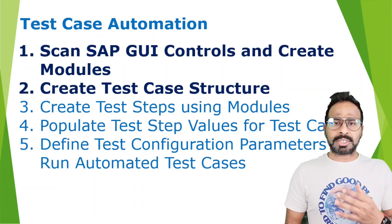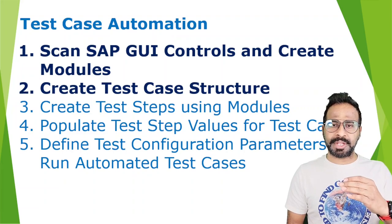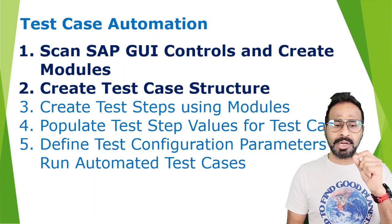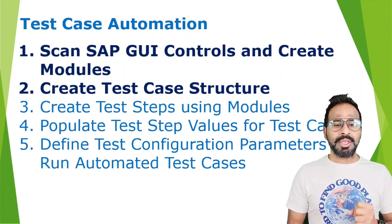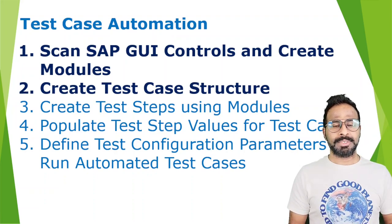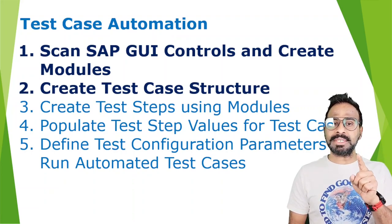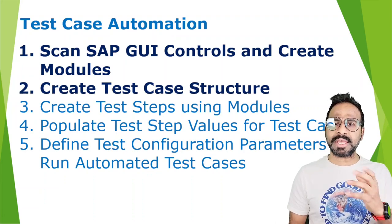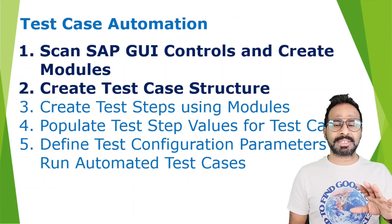Using Tosca to automate test cases requires five major steps. First, scan your SAP GUI controls and create required modules. Second, create a test case structure. Third, create test steps using modules. Fourth, populate test step values for the test cases. Fifth, define test configuration parameters and run your automated test cases. These are the five major steps to complete test case automation end to end.